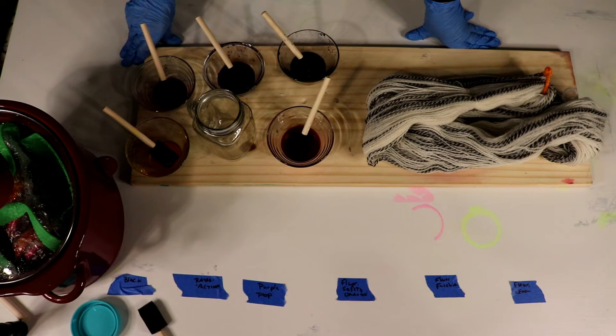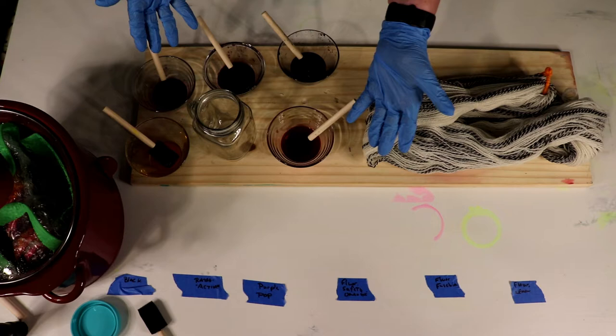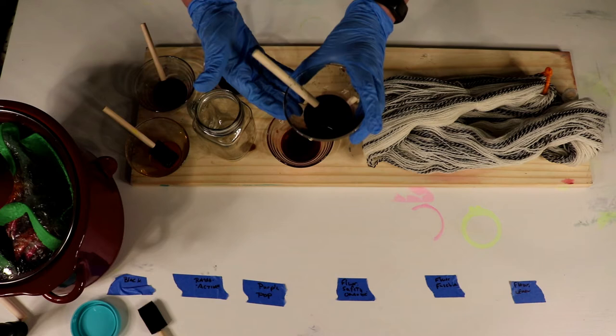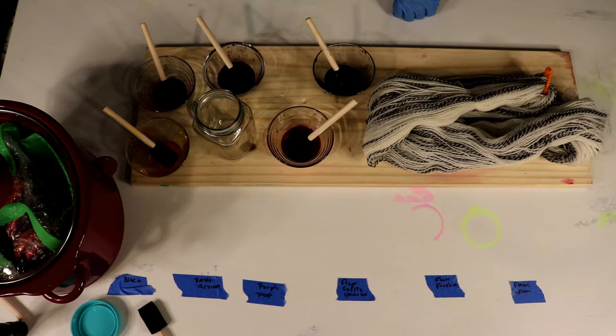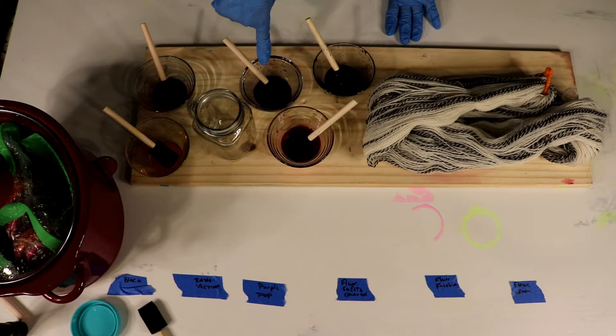But we have all of this dye left over. I can't let it all go to waste, especially since other than this black dye here, the rest of it is fluorescent. That's right, we've got some Jacquard acid dye jet black, Dharma Trading Company fluorescent safety orange, fluorescent lemon yellow, purple pop, and fluorescent fuchsia.